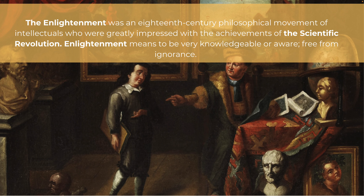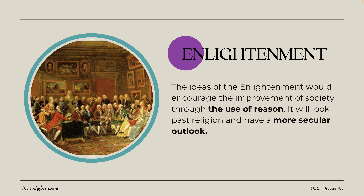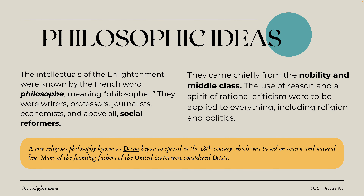Sciences, thought, existence — everything was questioned. The ideas of the Enlightenment would encourage the improvement of society through the use of reason. And instead of looking at religion for explaining everything, they started to take a more secular, or non-religious, outlook at practically everything. They also started to develop philosophic or thought-based ideas, and intellectuals of the Enlightenment were known as philosophes — or philosopher in French. They were writers, professors, journalists, economists,